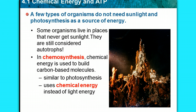One example is deep ocean vents at the bottom of the ocean — pitch black and completely anaerobic with very little oxygen. Animals called tube worms can live there, but only because bacteria are present. The bacteria convert hydrogen sulfide coming out of those vents — an inorganic chemical — into carbon-based molecules like sugar for the tube worms to use as energy.